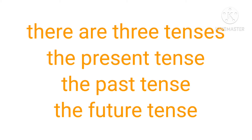Present tense wo verb hotate hain jo humme ye batate hain jo abhi ho raha hai — jo action present time mein ho raha hai. Past tense wo verb hotate hain jo humme batate hain jo action already ho chuke hain past time mein. Aur future tense wo hotate hain jo humme batate hain jo action abhi future mein hone wale hain.